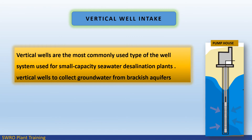Vertical well intakes are the most commonly used type of well system for small-capacity seawater desalination plants. Vertical wells are used to collect groundwater from brackish aquifers.